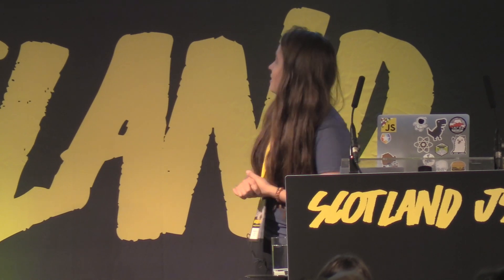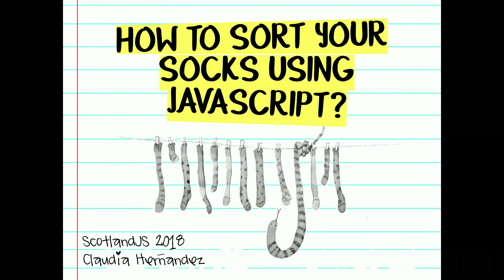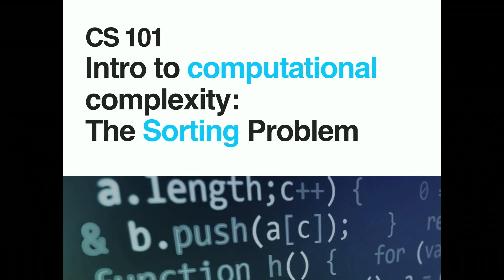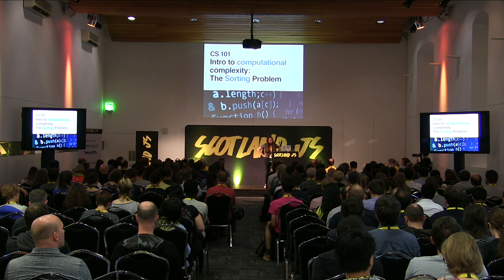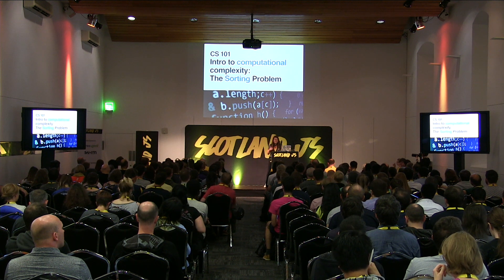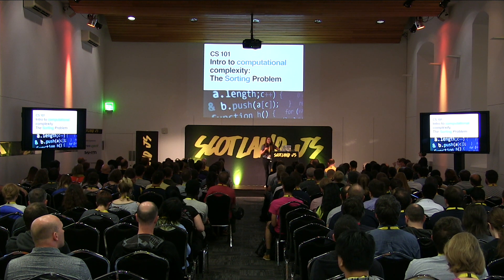The title of this talk is 'How to Sort Your Socks Using JavaScript.' I guess most of you are thinking, what is this girl even going to talk about? This is such a weird talk title. So to give you a little bit of context, this was the original title: 'Computer Science 101, Introduction to Computational Complexity, the Sorting Problem.' Are you excited now? So yeah, I decided to change the title because it seemed a little bit boring.